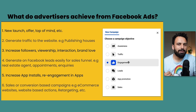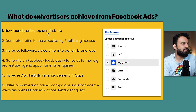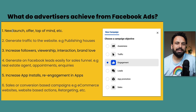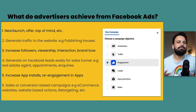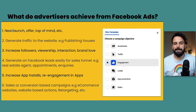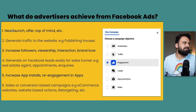Some advertisers use multiple objectives because they have multiple goals, but just to give you an idea: the first one is Awareness. Some companies just want to create awareness. For example, if iPhone is launching a new phone and they want people to know about it - that's it. They don't want Facebook campaigns to get online orders; they just want people to know that iPhone is launching a new product. The rest of their marketing already handles the buying - they just want awareness.